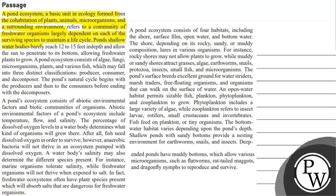Pond's shallow water bodies barely reach 12 to 15 feet in depth and allow the sun to penetrate to its bottom, allowing freshwater plants to grow. A pond ecosystem consists of algae, fungi, microorganisms, plants and various fish which may fall into three distinct classifications: producer, consumer and decomposer.